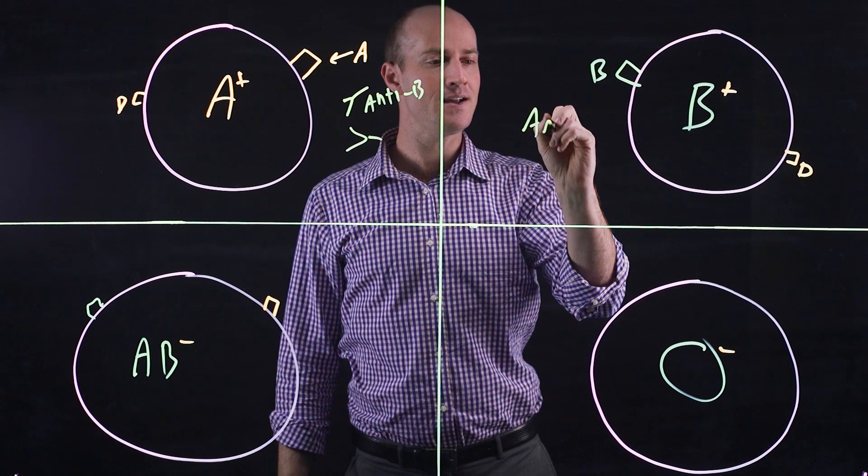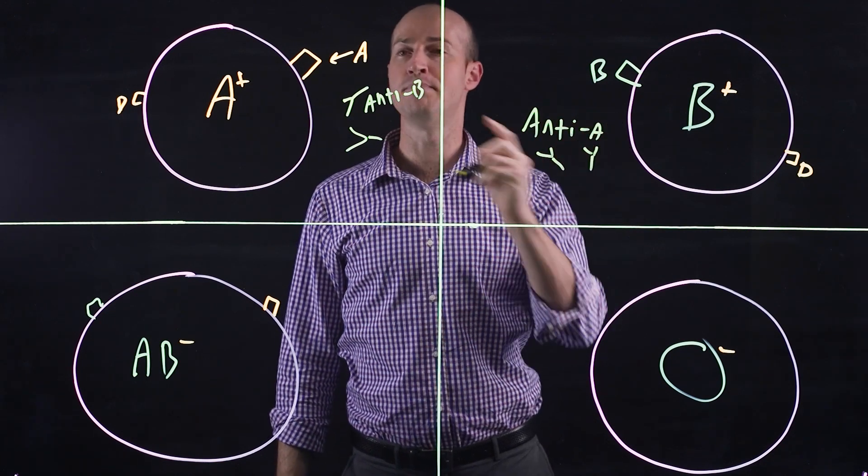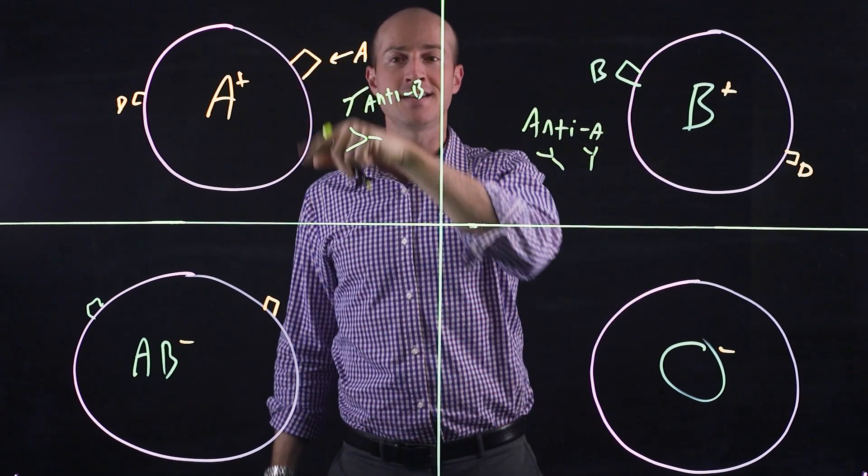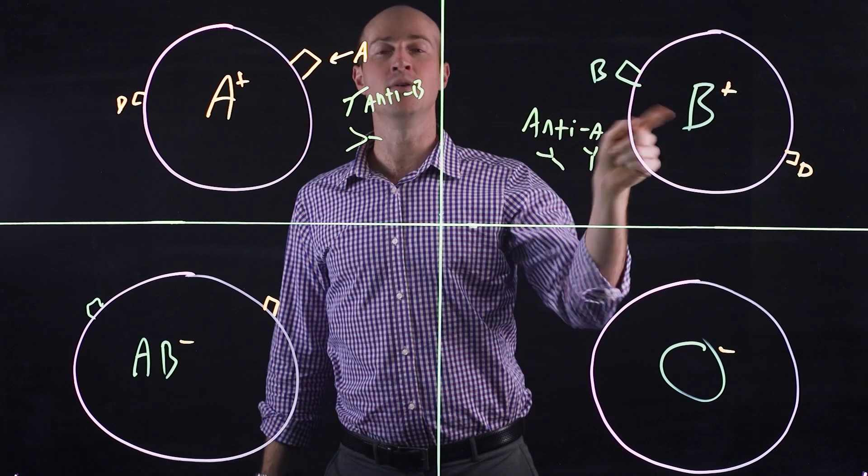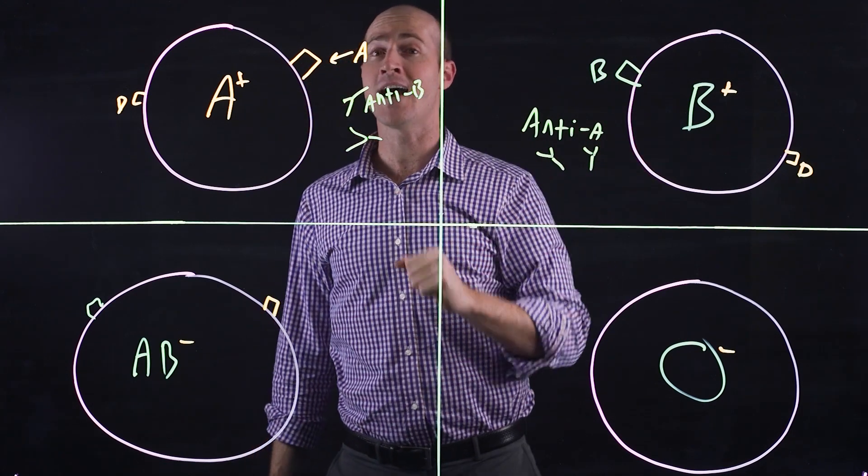If you're B, you develop anti-A. Small little antibodies that bind and block to A. If I put B blood type into the A blood system, the anti-B will attack it. If I put A blood type into the B system, the anti-A will attack it.